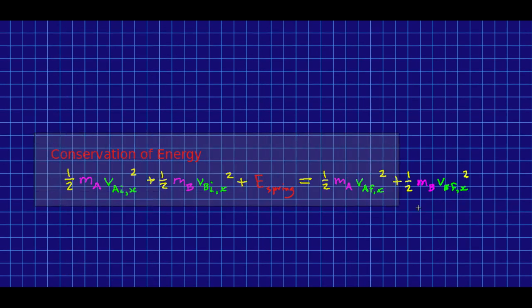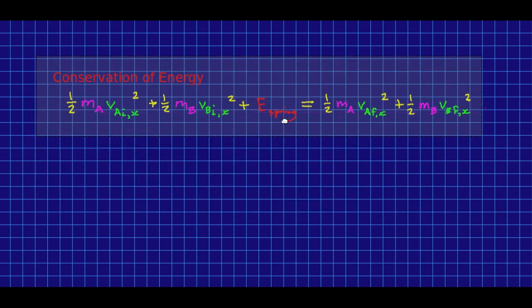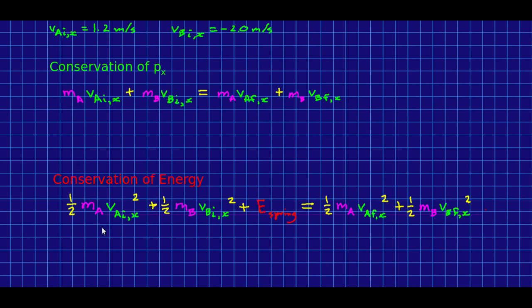So the next thing we would probably try is conservation of energy. So there's the conservation of energy for this system. We've got an initial kinetic energy for one cart and for the other cart, the spring energy and so on, and then just the kinetic energies at the end. And so now we would go about doing the algebra. We would probably take this and we would solve it maybe for this. Solve for that one velocity and we would now plug this in down here to eliminate vBfx and we would solve for vAfx.